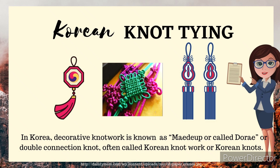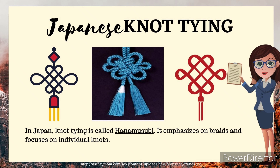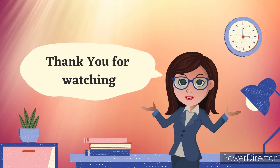Knot tying in Korea: Decorative knotwork is known as maedup, or called durae — the double connection knot, often called Korean knotwork or Korean knots. Zhongguo jie is the Chinese decorative handicraft art that began as a form of Chinese folk art in the Tang and Song Dynasty (960–1279 AD) in China. In Japan, knot tying is called hanamusubi, which emphasizes braids and focuses on individual knots. Thank you for watching.